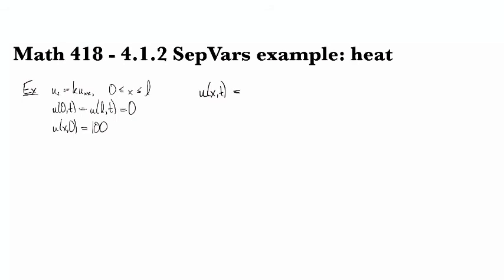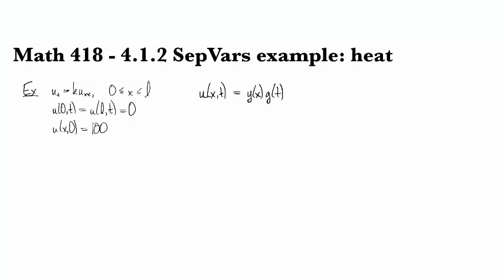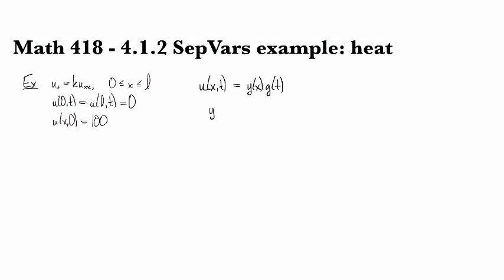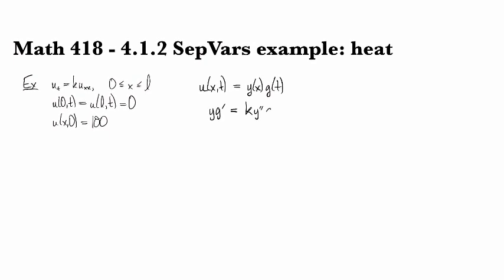So we'll make the standard separation of variables assumption that there exists a solution that looks like a function of x times a function of t. And we substitute that into the PDE. And when we do that, we get y g prime equals k y double prime g.